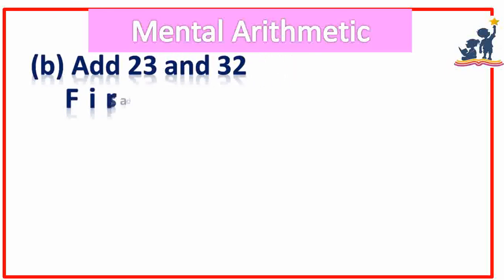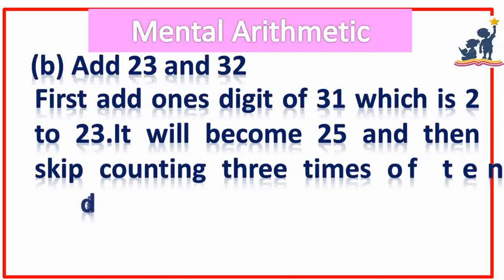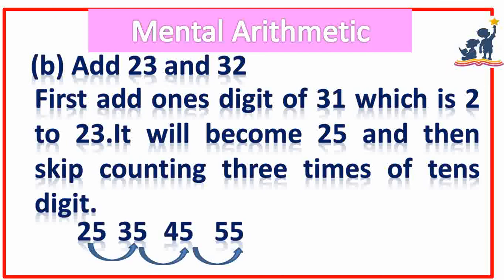Add 23 and 32. First, add the ones digit of 32, which is 2, to 23. It will become 25, and then skip count 3 times for the tens digit. So you can count like this: 35, 45, 55. That is 3-step counting, so the answer becomes 55. 23 plus 32 is equal to 55.